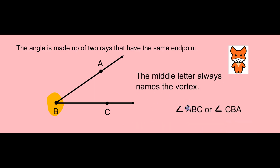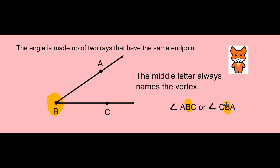So I can call this angle ABC, or CBA. The middle letter in the name of my angle must always be the vertex. My vertex is B.